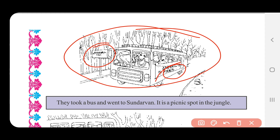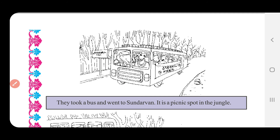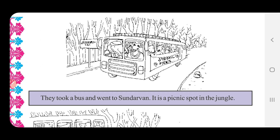They went to Sundarvan — two kilometers away. They went — ગયા. ક્યાં? Sundarvan. તેઓ બસમાં Sundarvan ગયા. Sundarvan — સુંદર, ત્યાં ફરવા ગયા. આપણે પણ અલગ અલગ જગ્યા ફરવા જઈએ છીએ.